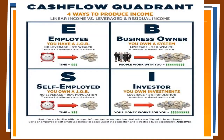This is the cash flow quadrant, which shows the four ways to produce income. On the left-hand side we have linear income, and on the right-hand side we have leverage and residual income. On the left you have employees and the self-employed — people who either have a job or own a job. This is where 95% of the population is, but they only control 5% of the wealth. In order to earn more money in these brackets, you have to work more hours.